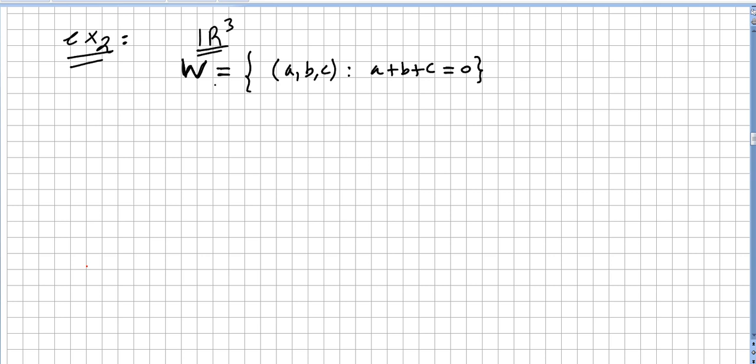We have W, where W will be... A, B, and C, they are reals. In this space, A plus B plus C is zero.